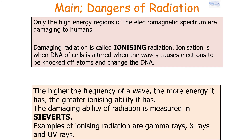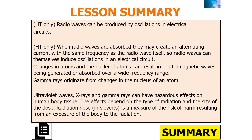The higher the frequency of a wave, the more energy it has, and the greater its ionizing ability. The damaging ability of radiation is measured in sieverts. Examples of ionizing radiation include gamma rays, x-rays, and UV rays.